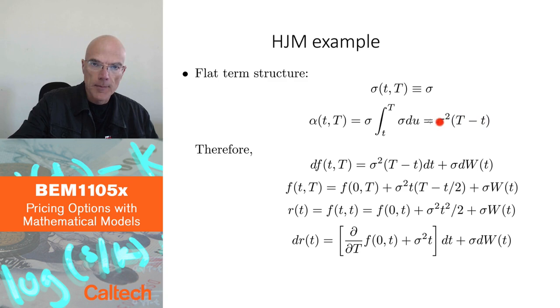So there is our alpha, which means that df, the dynamics of the forward rates are alpha, which is sigma squared T minus t dt, plus constant sigma dW(t).